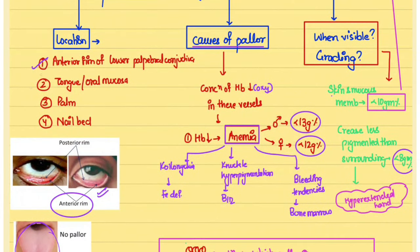Pallor is present when there is decreased concentration of oxygenated hemoglobin, the main cause being anemia. The cutoff for anemia is a hemoglobin concentration less than 13 g% in males and less than 12 g% in females.